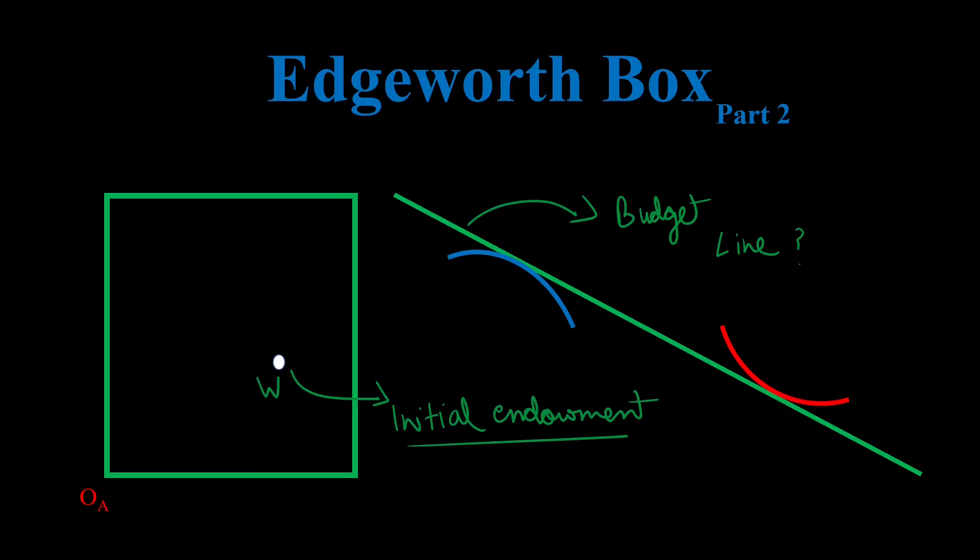In the last video, we set up our Edgeworth box where we would have two agents directly exchanging goods between themselves. This time, there won't be such a direct exchange. Instead, we'll assume there's a third person who's setting up a price for both of our goods and the agents will decide how many goods they want based on those prices.